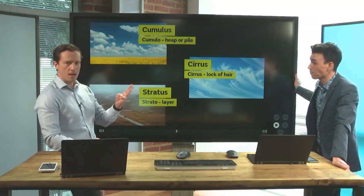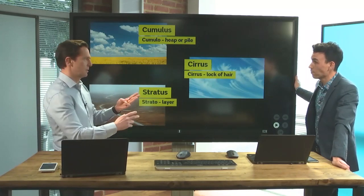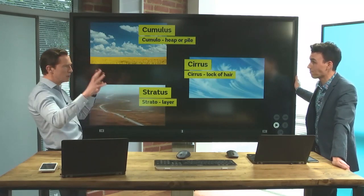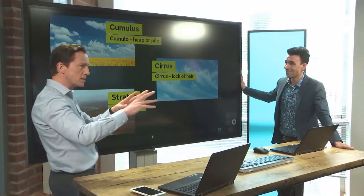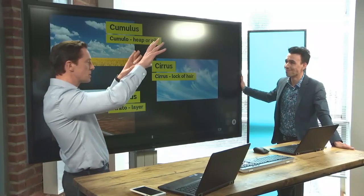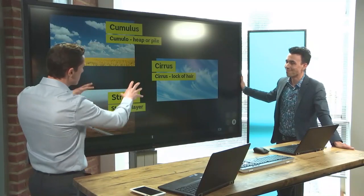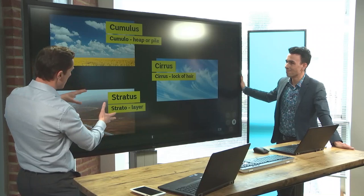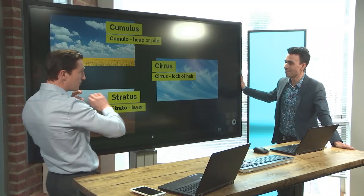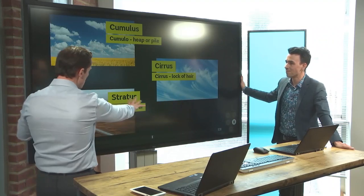There are three main types that he looked at. He looked out the sky — I think he was on a train at the time — and basically started categorizing them into these three main different types, different flavors of cloud, if you like.